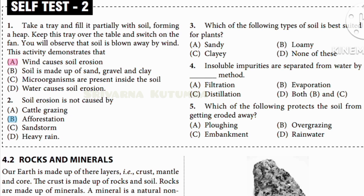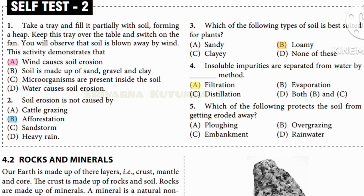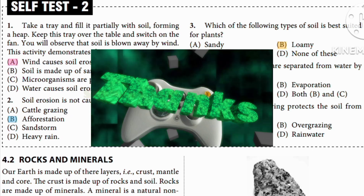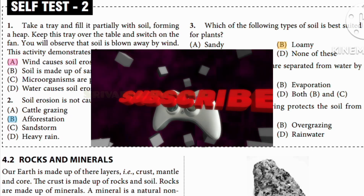Which type of soil is best suited for plants? Sandy soil has more air space but less water; clay soil has more water but less air space. Therefore loamy soil is best. Insoluble impurities are separated by filtration, not by evaporation or distillation — those methods are for soluble impurities. To protect soil from getting eroded, embankments are the correct answer, as plowing, overgrazing, and rainwater all contribute to erosion rather than preventing it.